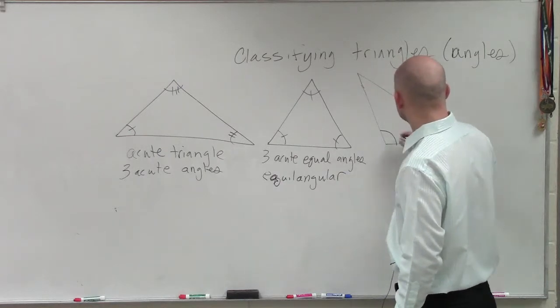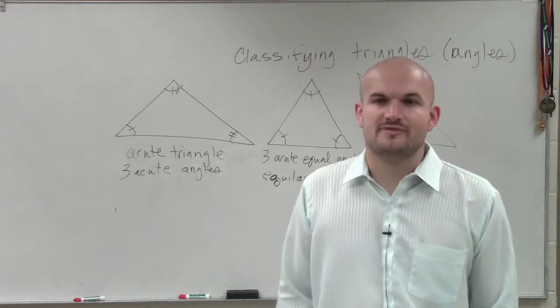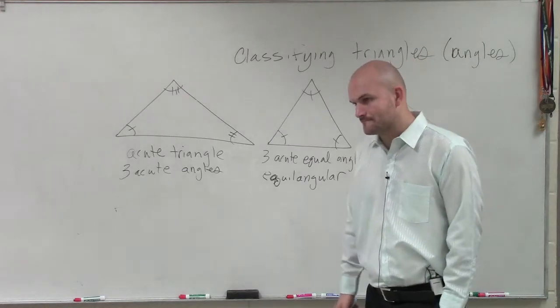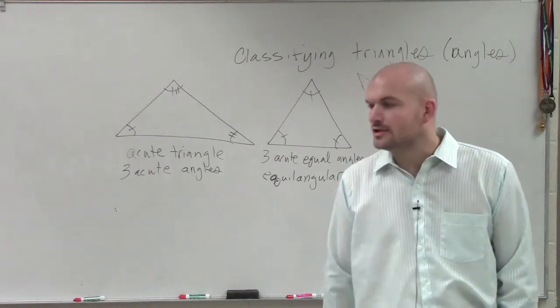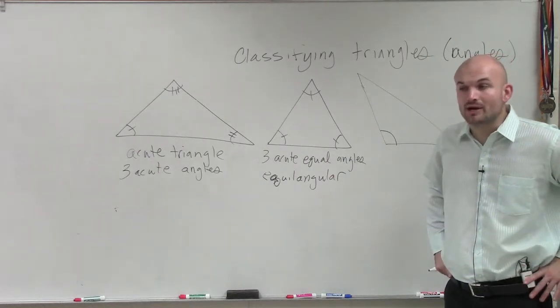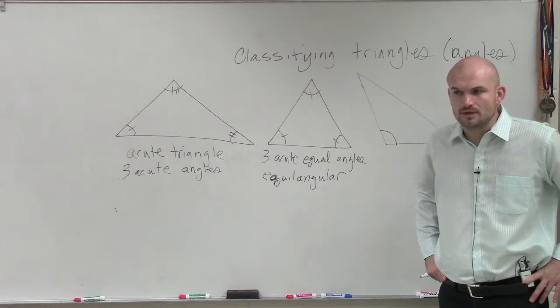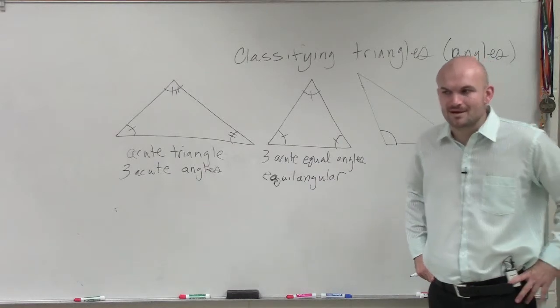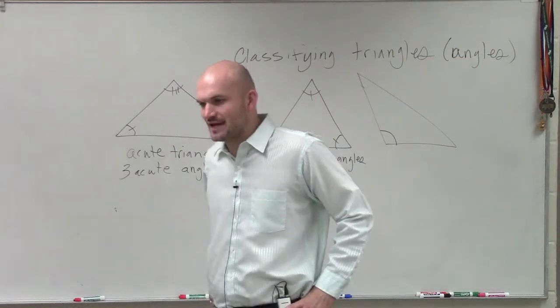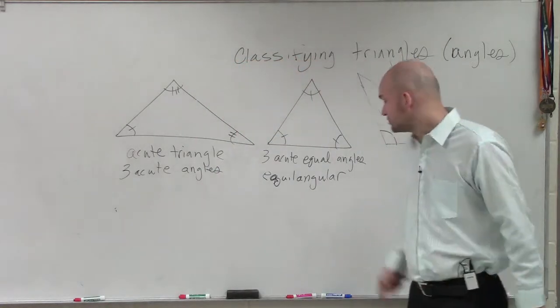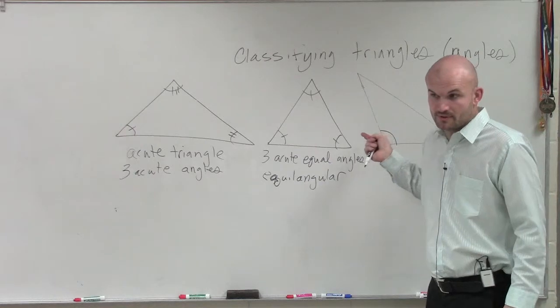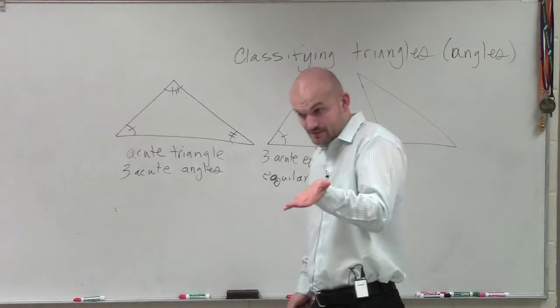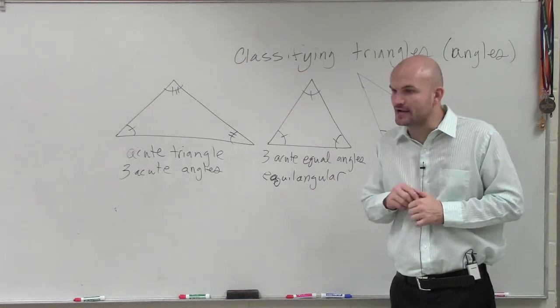Then if we have a triangle that has an obtuse angle. Now, I'm going to ask this very important question. Ashley, do you think it's possible for a triangle to have more than one obtuse angle? No? Why not? What is the definition of an obtuse angle? The measure of the angle has to be what? More than 90 degrees.